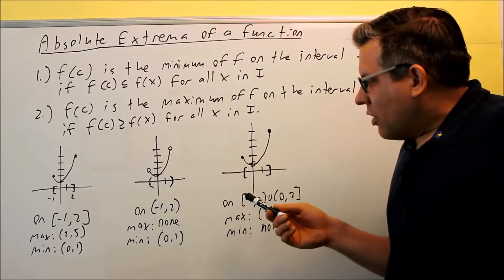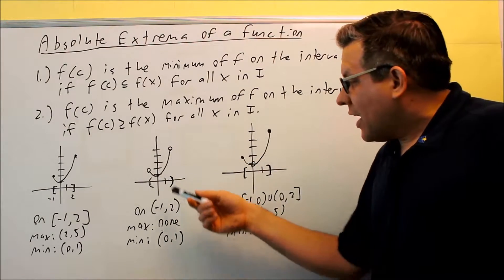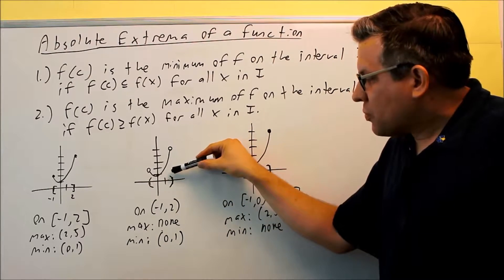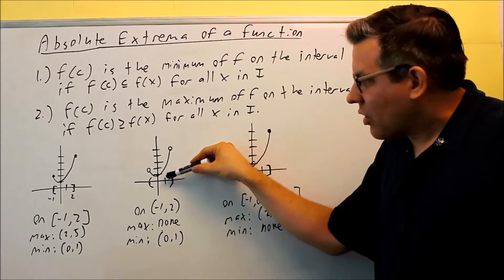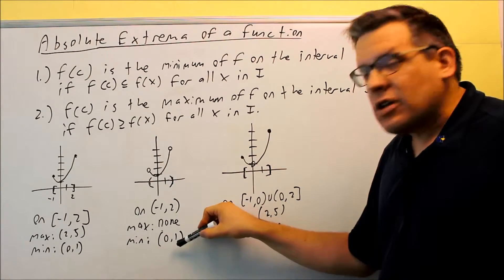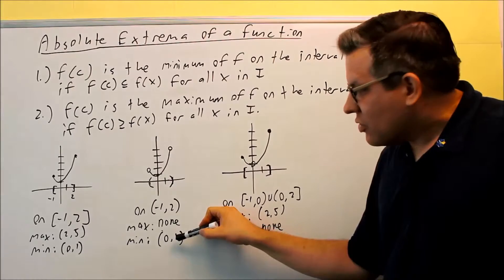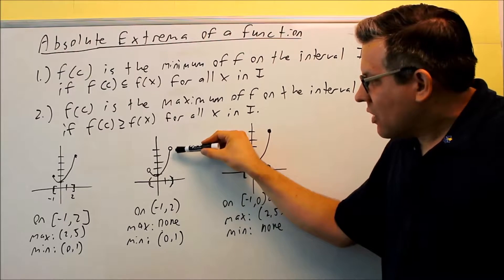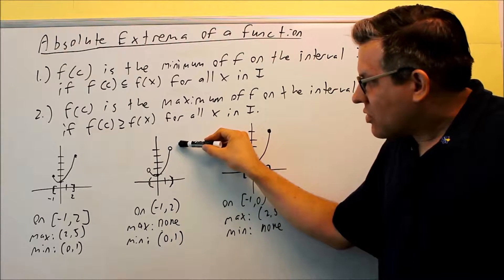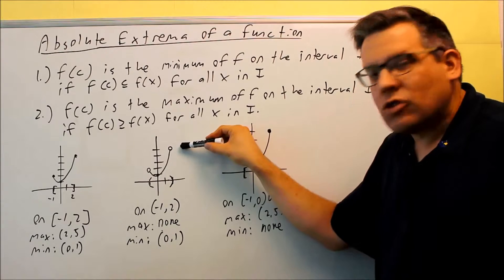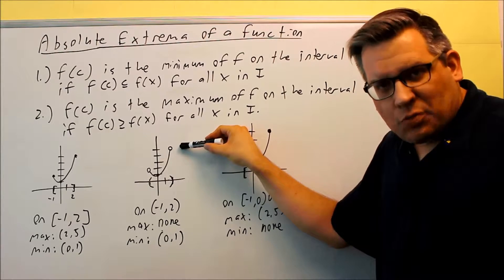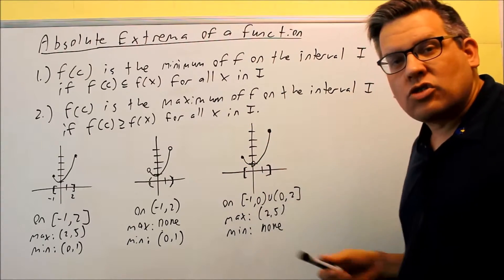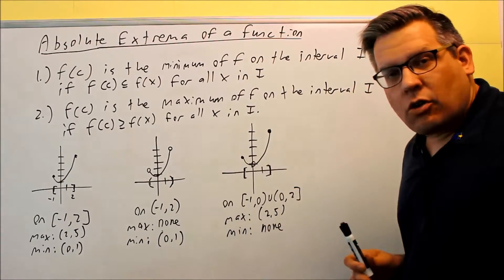The next one is an open interval — open on the endpoints between negative 1 and 2. The lowest point on here does exist; it's a solid line, so we do have a minimum. The minimum is going to be (0, 1). However, notice that we don't have an absolute max, because there's an open circle there, and we can get infinitely close to but can't actually reach the absolute highest point on the graph. So if you have an open circle there, we have to say there's no absolute max for this particular graph.